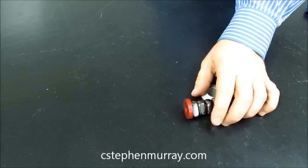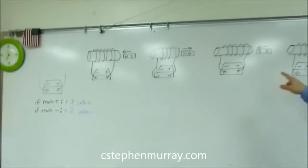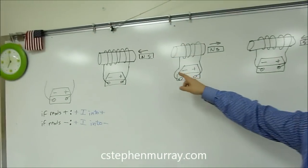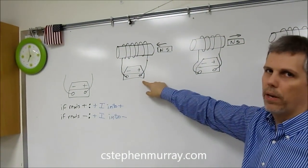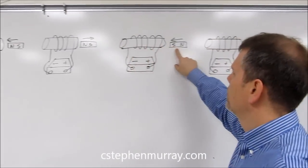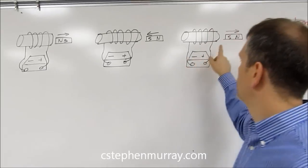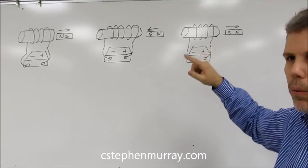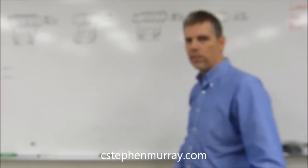Now if we look up on the board, we have four situations that we're going to go over. We're going to put a north pole in, read the ammeter. We're going to pull the north pole out, read the ammeter, south pole in, read the ammeter, south pole out. And then we're going to derive experimentally what Lenz's Law tells us.